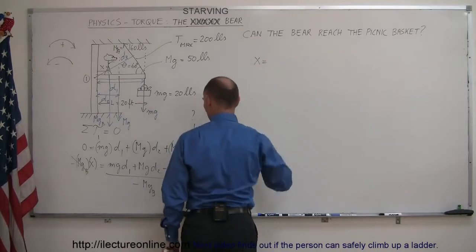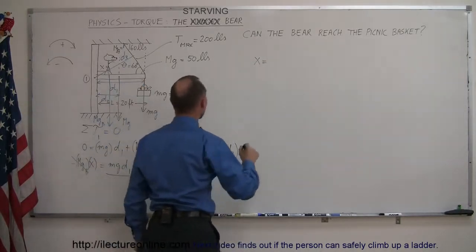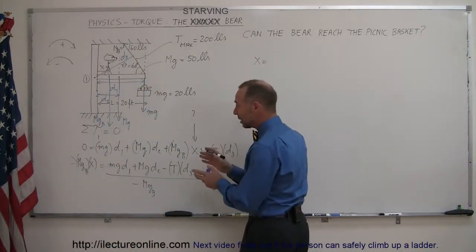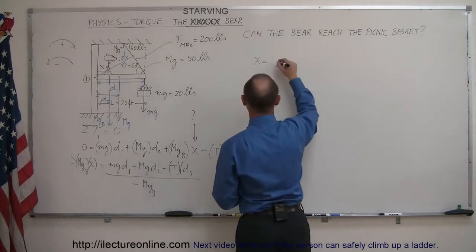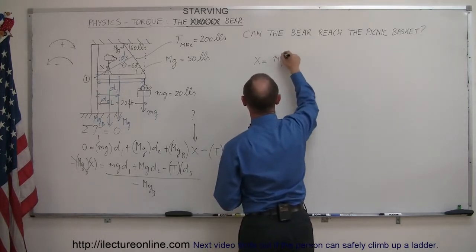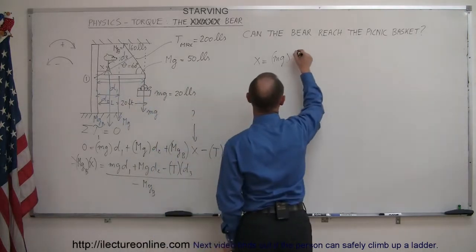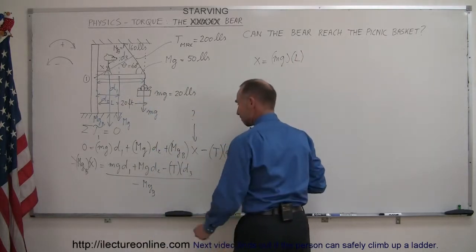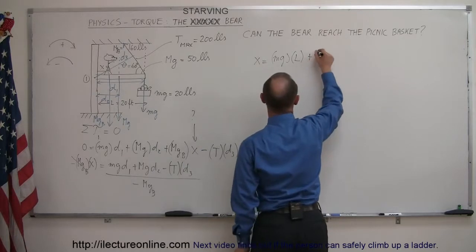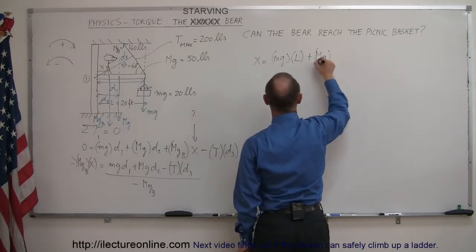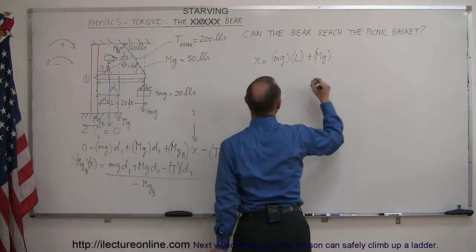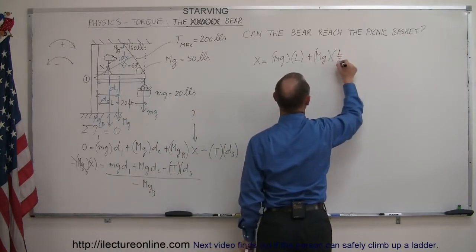Let's try this. So X is equal to MG times, and first I'm going to put in what the D1, D2, and D3 are equal to. So we have the little MG times D1, and D1 is the total length of the beam. So I'll just write L for the length of the beam. Plus big MG, and D2 here would be half the length of the beam, so that would be L over 2.